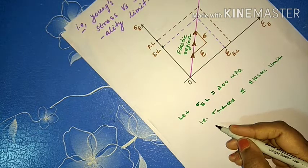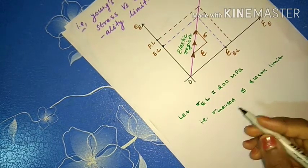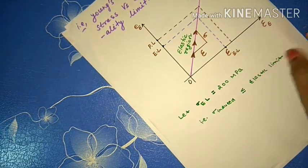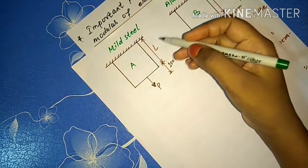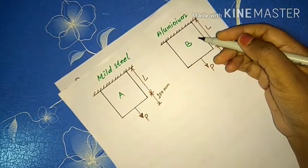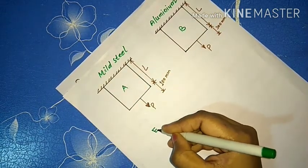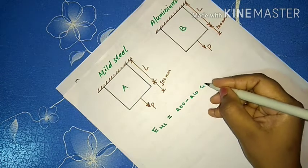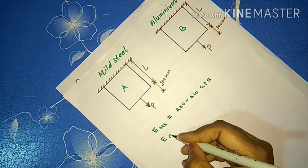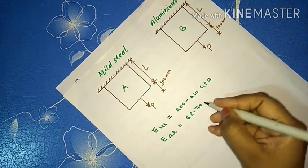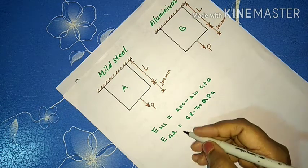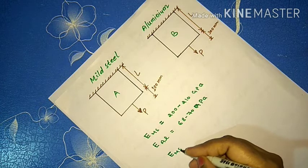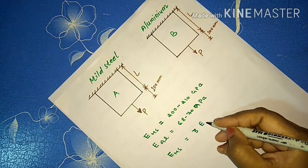Now, let us explain the effects of Young's modulus of elasticity on longitudinal strain. Consider two bars — one of mild steel and one of aluminium. Young's modulus for mild steel is 200–210 GPa, and for aluminium it is 68–70 GPa. From these values, the Young's modulus of mild steel is approximately three times that of aluminium: E_A equals 3·E_B.